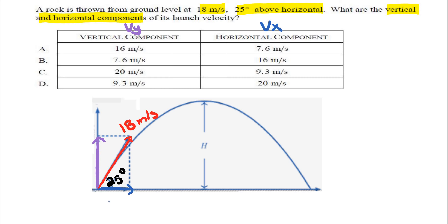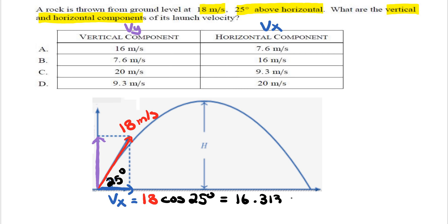The blue vector represents the horizontal launch velocity Vx. We find that by taking the launch velocity of 18 and multiplying by cosine of the angle, which is 25 degrees. Putting that into a calculator, we get approximately 16.313 meters per second, which is roughly option B.